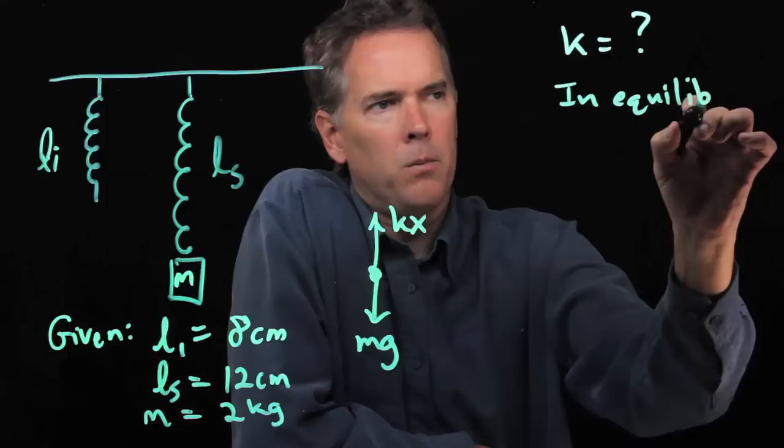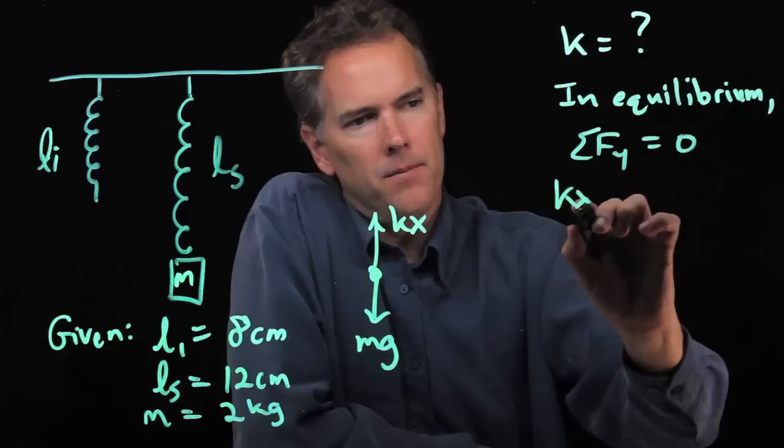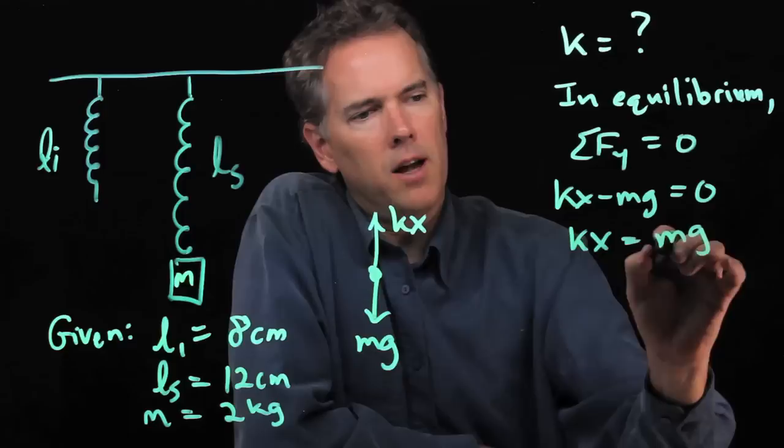If this is in equilibrium, just hanging there not bouncing up or down, then the sum of the forces in the y direction has to equal zero. Kx is going up, Mg is going down. Those are the only two forces, so they have to add up to zero.